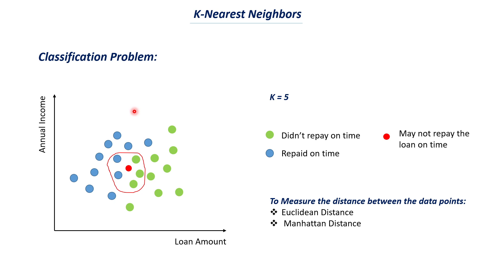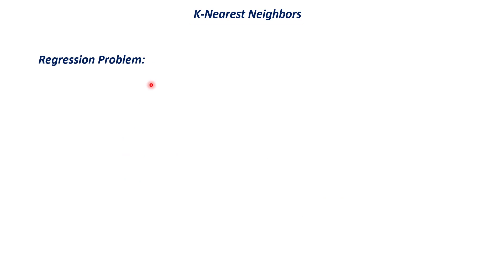Another thing to remember is that the K value should be an odd number. If you have an even K value, you might get an equal number of data points from each class — for example, three green and three blue — and the model cannot decide which class the new data point belongs to. With an odd K value like 5, the model can always make a decision when classes have similar counts.